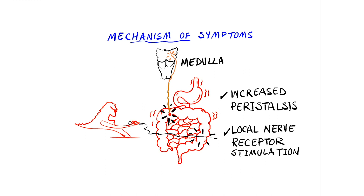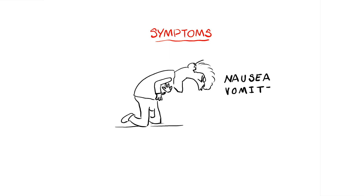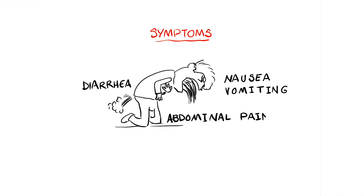Looking at the clinical presentation: the patient abruptly and suddenly develops nausea and profuse vomiting. Diarrhea is also present but normally vomiting and nausea are more significant and severe compared to the diarrhea. Abdominal pain and sometimes fever are also present. Remember, this is a superantigen — it can cause interleukins to be released, including interleukin-1, which causes fever. However, fever is less common.